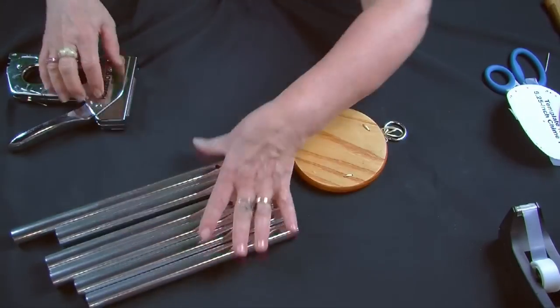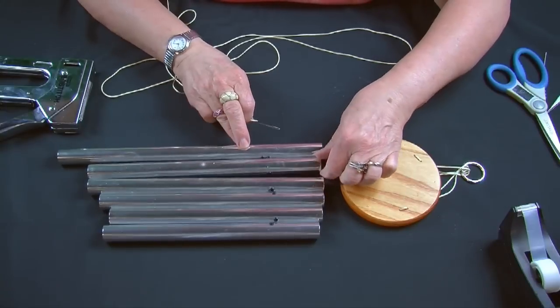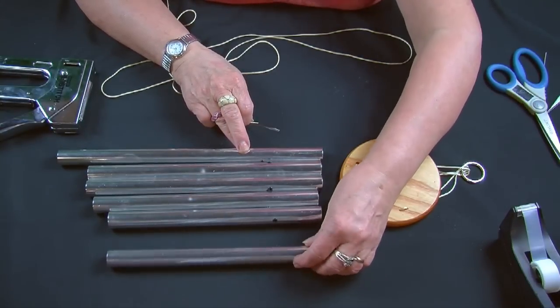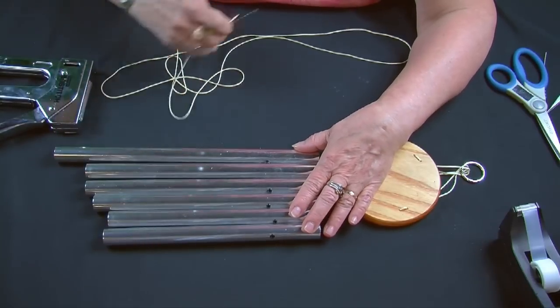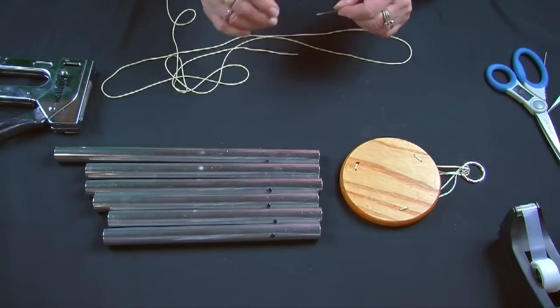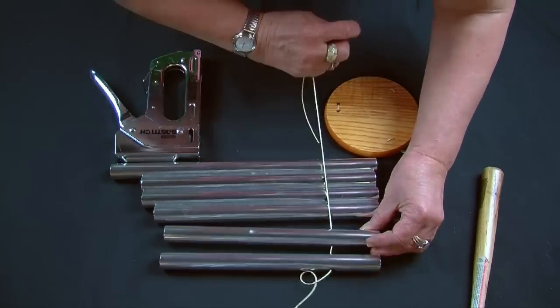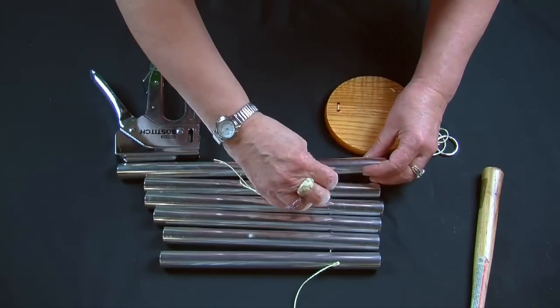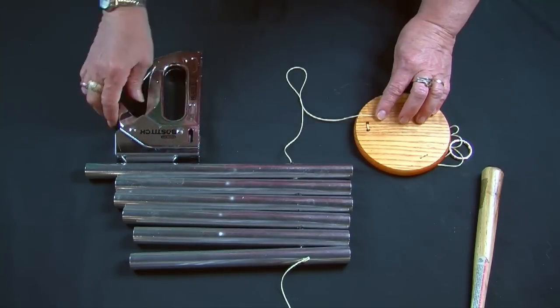Once you have marked the chime top, take your chime tubes and organize them in order from longest to shortest. Now take a look at your chime tubes. If the chime is a little older, there may be marks where the clapper hits them. If so, lay the tubes with those marks facing up. Next, take your string and thread it through all six tubes at once. Leave about an inch and a half tail on the string and staple it to one of the marks you made on the chime top. It doesn't matter which one.